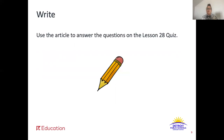Now that you've read, thought, and talked about the text, it's time to show off what you've learned so far this week. Go ahead and turn to the lesson 28 quiz — that's page 85 of your ELA packet. Use the text pro con: should we stop recycling our trash to answer each of the questions on the quiz. Remember to look back in the text when you need to. Go ahead and pause here and take that quiz.